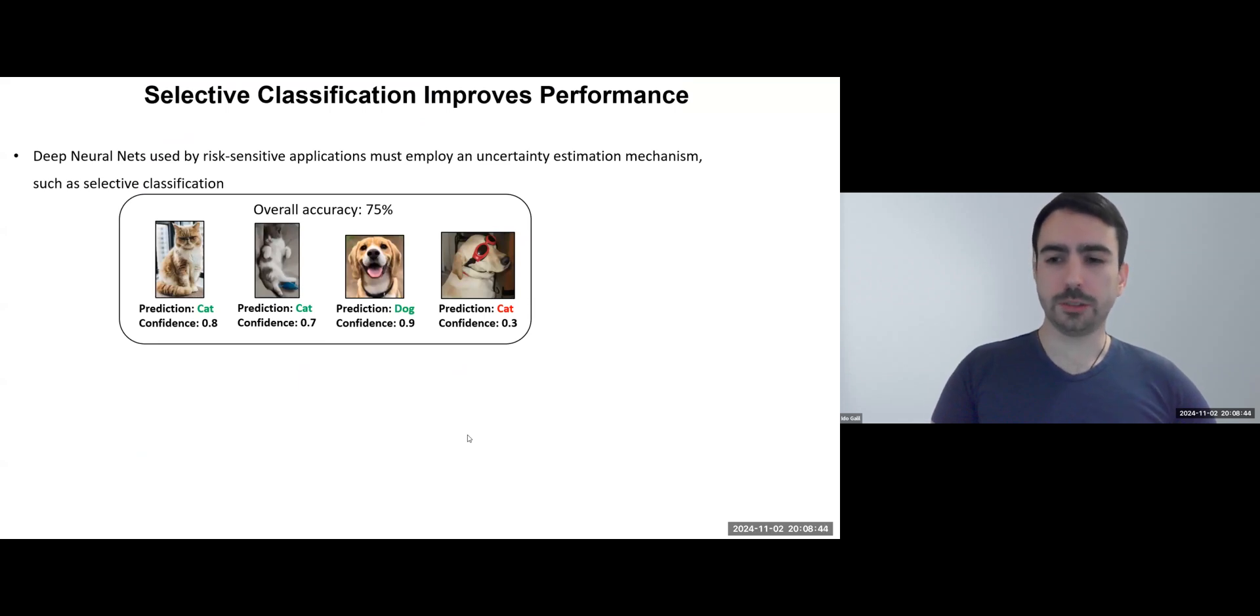In high-stakes applications, neural networks need uncertainty estimation mechanisms to control their risk. Selective classification helps with this by letting models abstain from predictions when uncertain, thus improving accuracy on the predictions they keep.